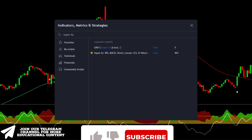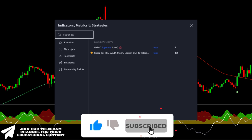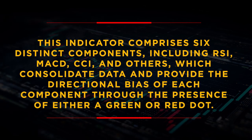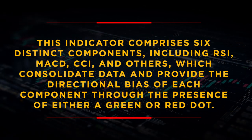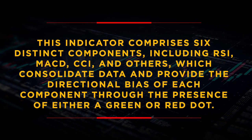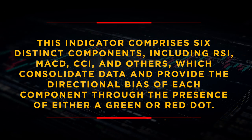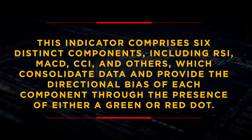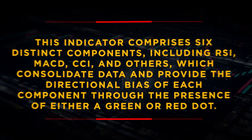In the final step, return to the Indicators tab, type 'Super 6X,' and add the following indicator. This indicator comprises six distinct components, including RSI, MACD, CCI, and others, which consolidate data and provide the directional bias of each component through the presence of either a green or red signal.